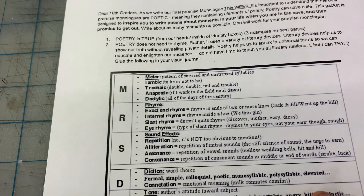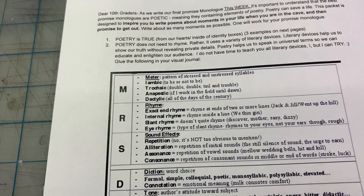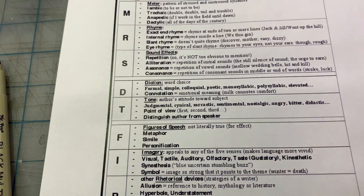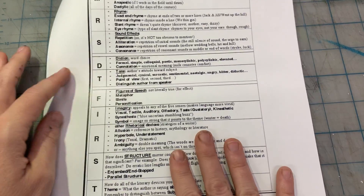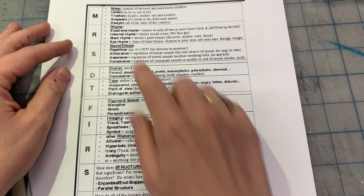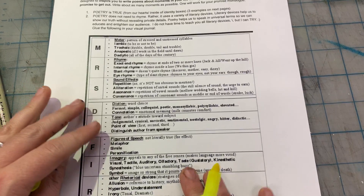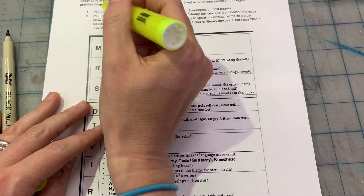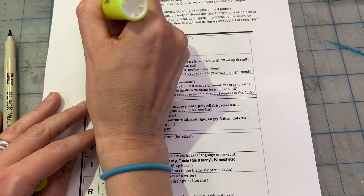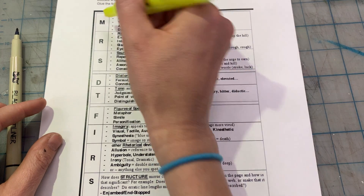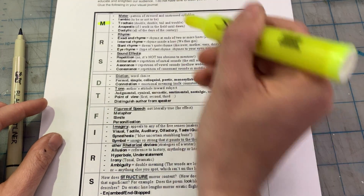Hello — okay, this is a quick warm-up for our sophomore promise writing day. This is also a review of literary devices and poetic devices, and how you can use them. A literary device is something that helps to make poetry true. This is called an acronym: MRS DT FIRST.